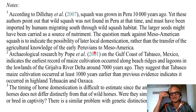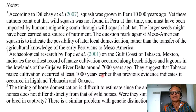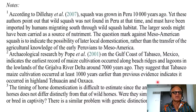You can see how deductions are made without being reductionist. Archaeological research by Pope et al. on the Gulf Coast of Tabasco, Mexico, indicates the earliest record of maize cultivation occurred along beach reaches and lagoons in the lowlands of the Grijalva River Delta around 7,000 years ago. They suggest Tabasco maize cultivation occurred at least 1,000 years earlier than previous evidence from the highlands of Tehuacan and Oaxaca, showing how timelines get modified based on new evidences and interpretations.